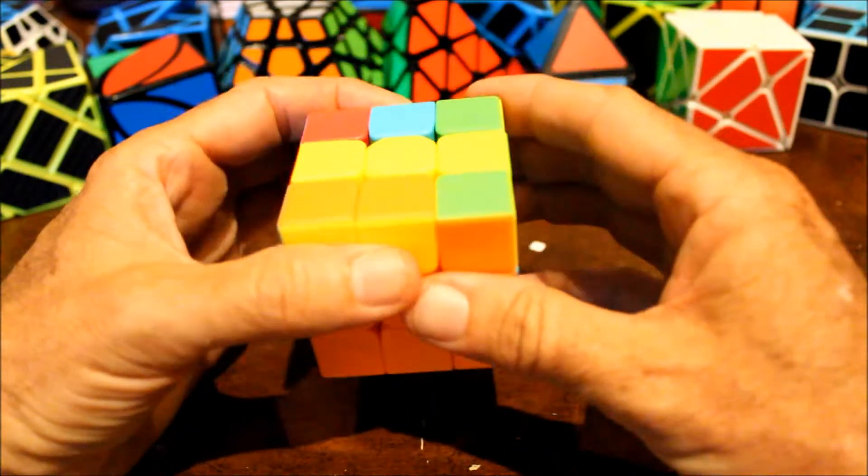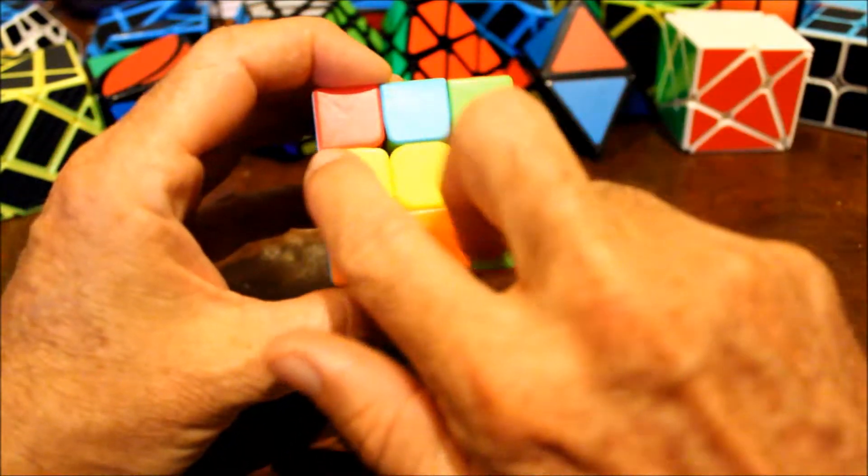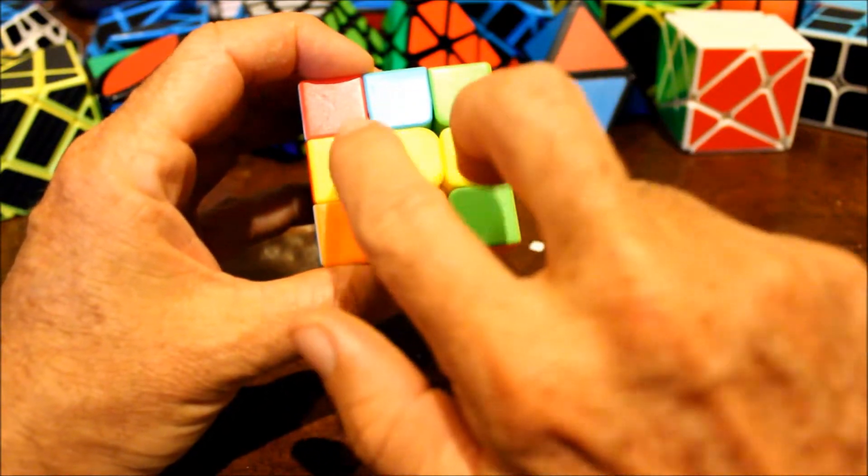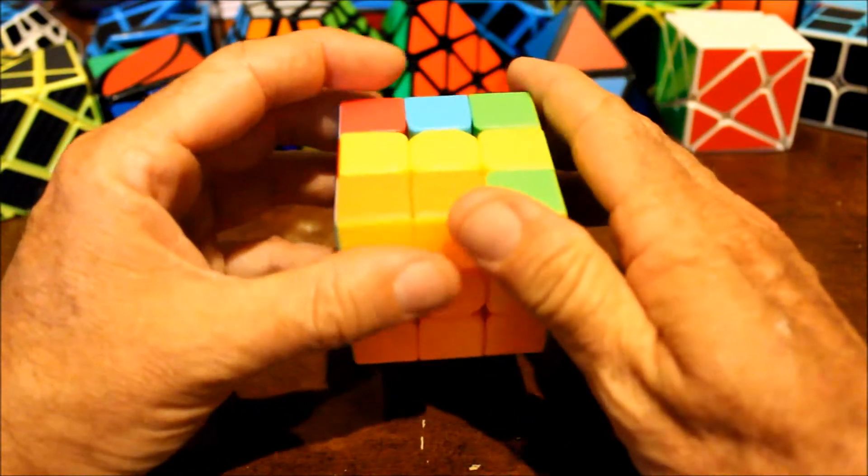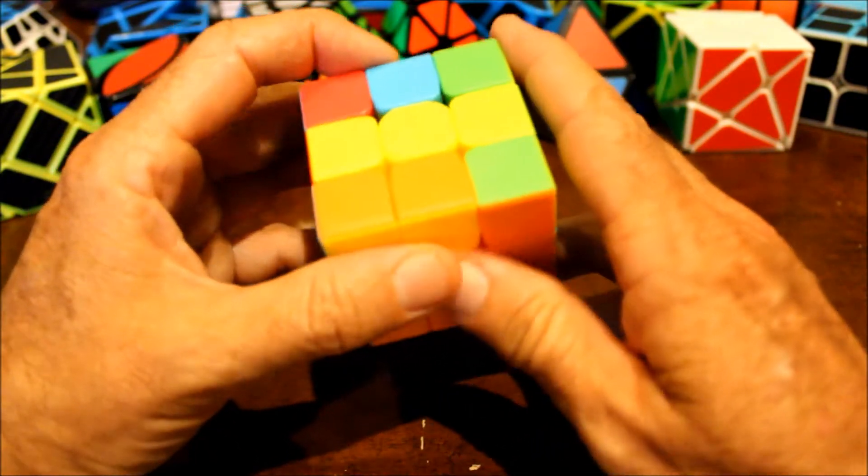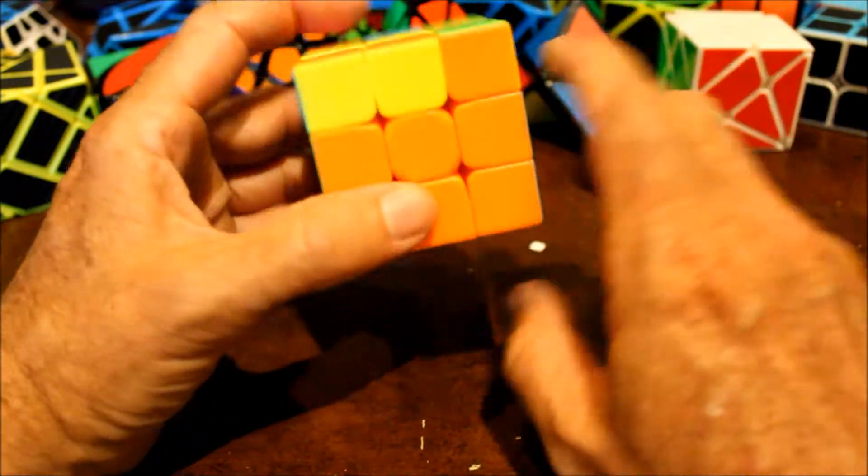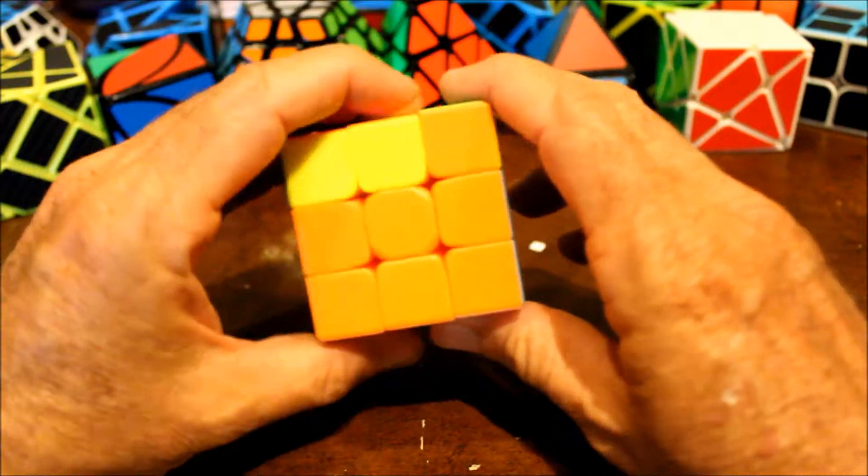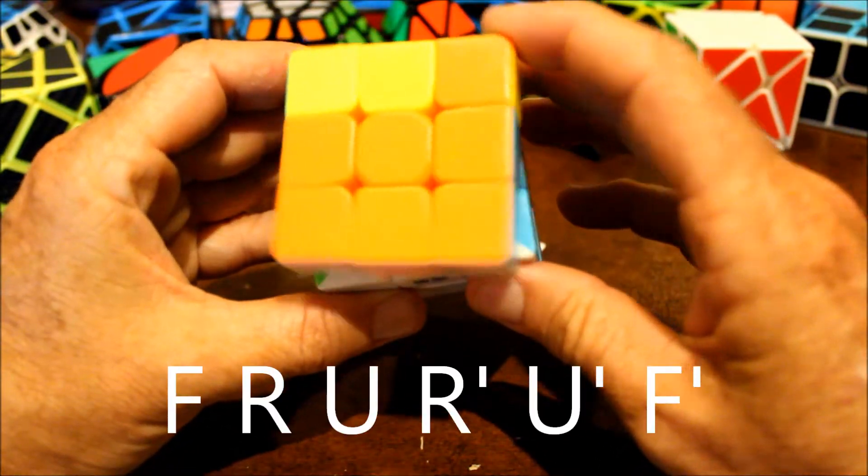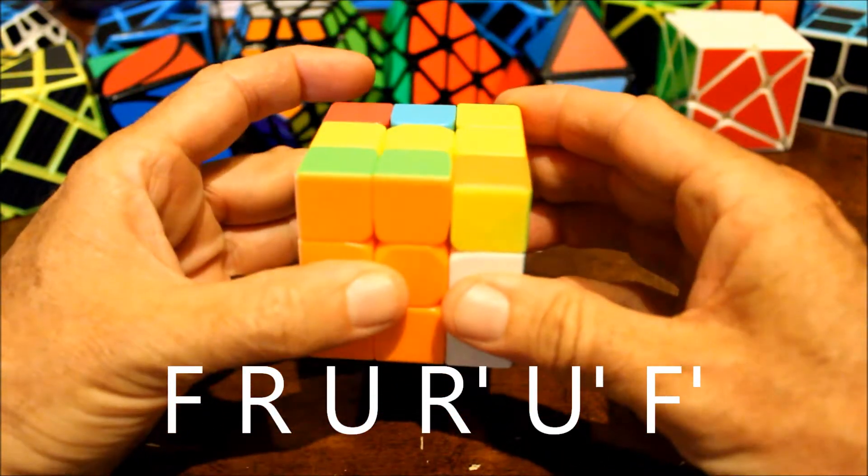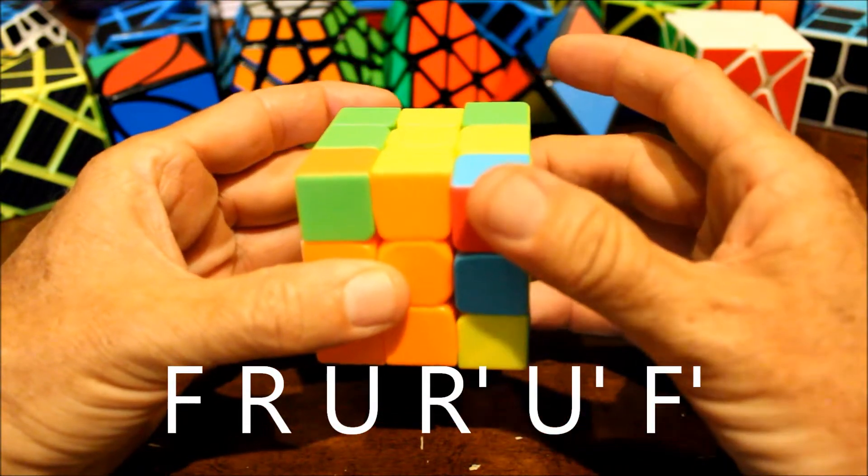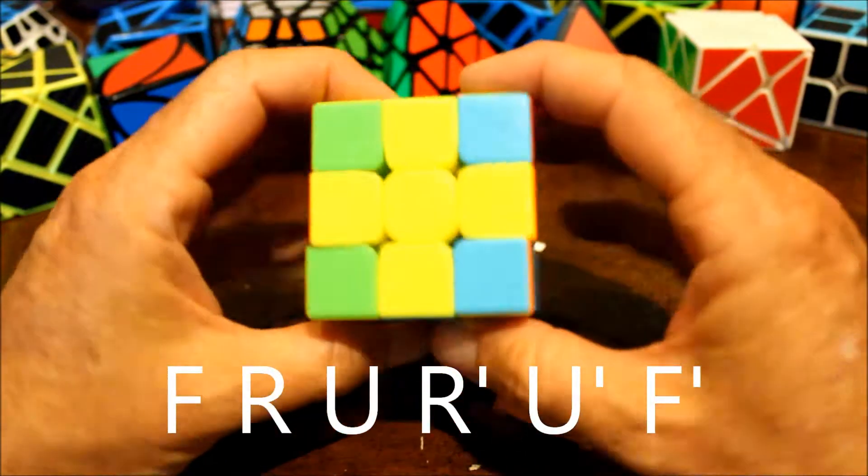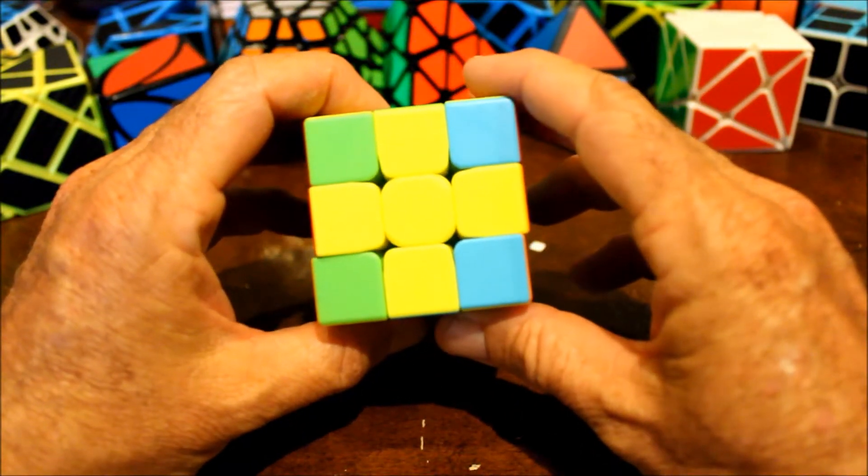So if they were adjacent like you just saw, it will turn it into being the two yellow pieces across from each other. If you get to this point, then you put them on the left and the right side and do the same thing again. Front, right, up, right prime, up prime, front prime. And now we have the yellow cross.